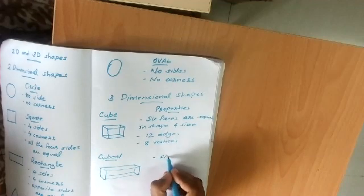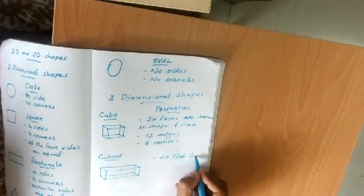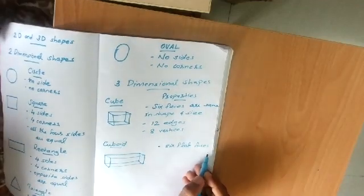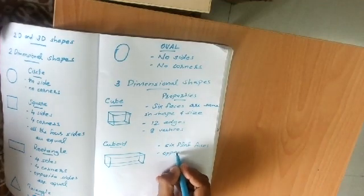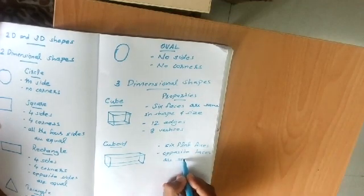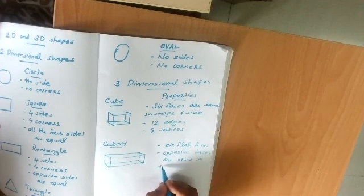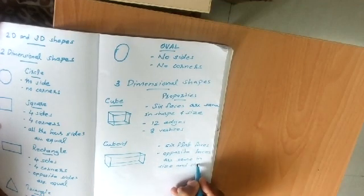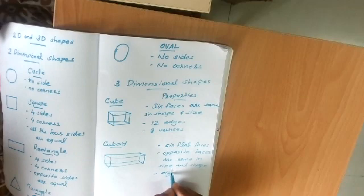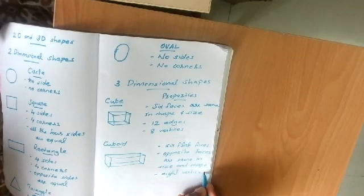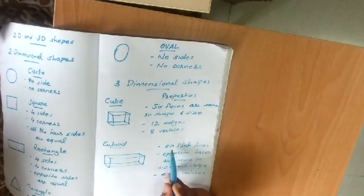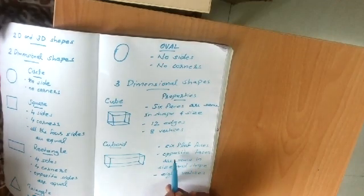A cuboid also has six flat faces, but only the opposite faces are the same in size and shape. A cuboid also has eight vertices. So the properties of a cuboid are: six flat faces, opposite faces equal in size and shape, and eight vertices.